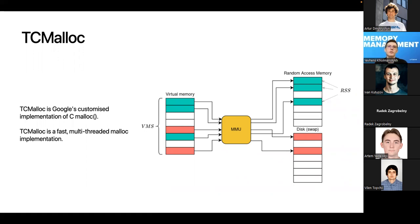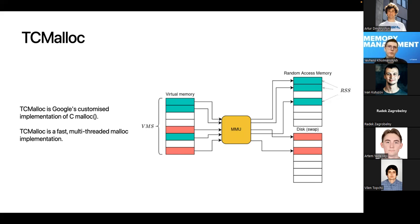Processes do not have direct access to physical memory. Instead, they use the MMU — Memory Management Unit — a special device on the computer that translates physical memory addresses into virtual memory addresses. When a process is out of memory, the program can use syscalls to get more, or use custom allocators like TCMalloc. Google designed TCMalloc to allow optimized memory fragmentation and optimized memory requesting processes from the operating system.